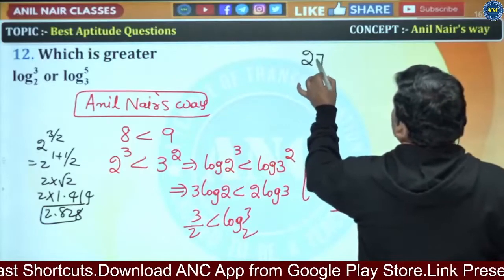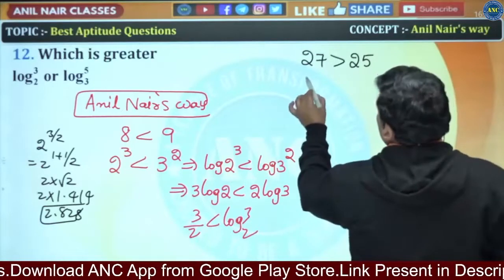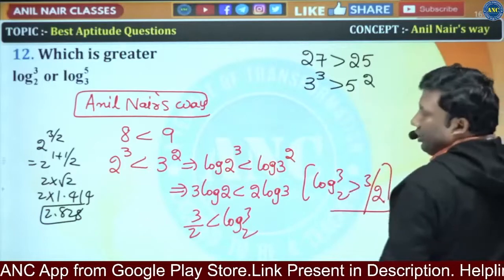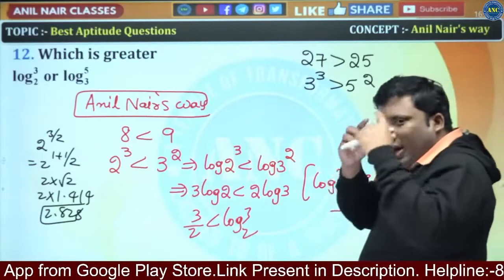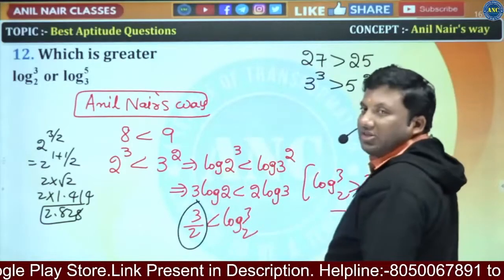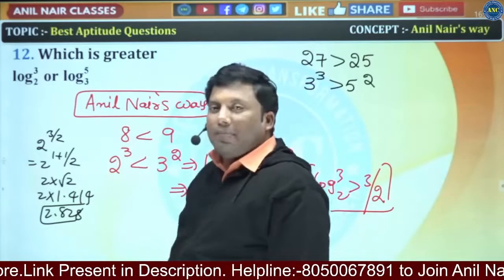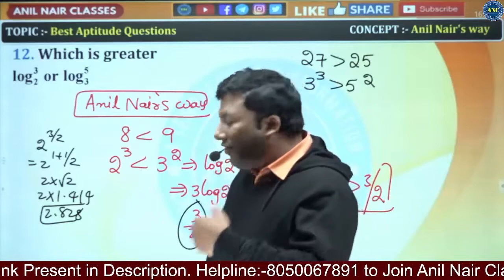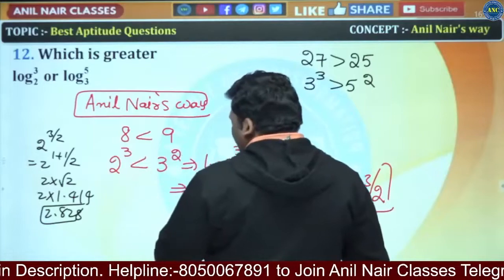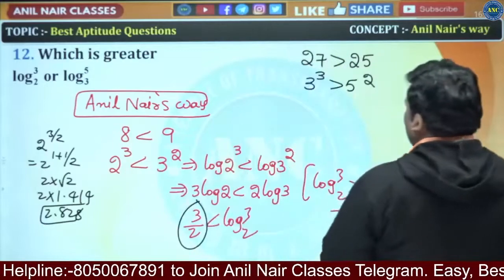Can I say that 27 is greater than 25? I will tell you why I am doing this. 27 is 3 cubed, which is greater than 5 squared, which is 25. The idea that came into my mind is that this relates to 3 by 2. I need log 5 and log 3 — specifically log 5 base 3 — and I need to compare it with 3 by 2. From 3 cubed equals 27 and 5 squared equals 25, I got that idea.